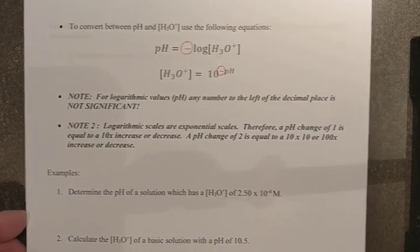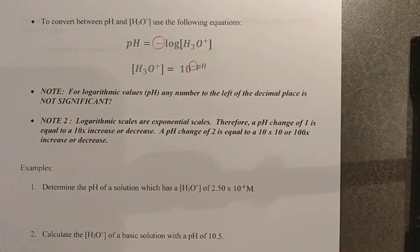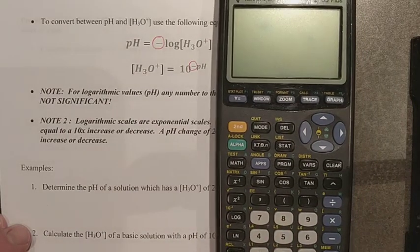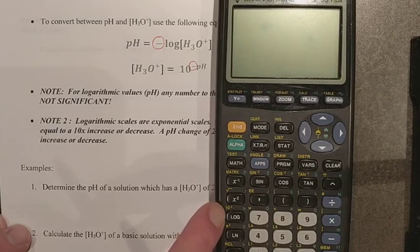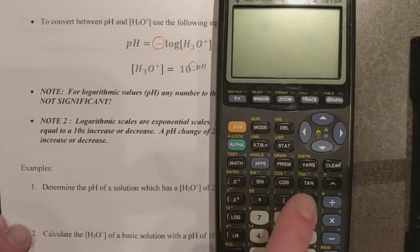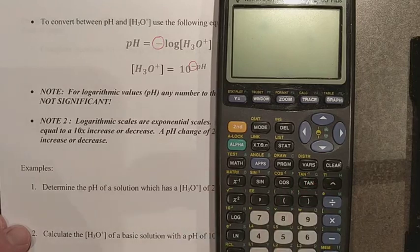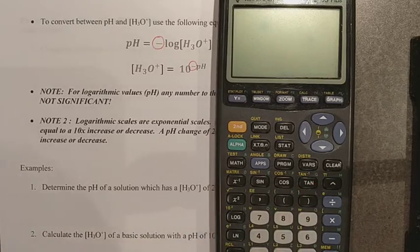There are a couple of ways to do exponents on your calculator. Since everything we're doing is base 10, you can use the second function log — see that little 10 raised to the power of x? You can use that button, or you can use the little hat button that you've learned in math class for placing exponents. I'll show you both in the examples.